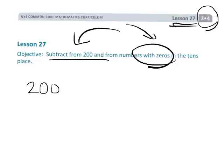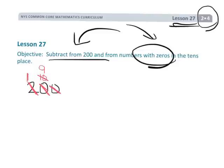The idea is that students are going to learn that if they need value — if they need dots in the ones column — they're going to have to first borrow from the hundreds column and unbundle. So they unbundle, leaving one hundred, and now have ten tens. But that hasn't quite helped in the ones column yet, so they unbundle again, leaving nine tens, and now have ten ones.